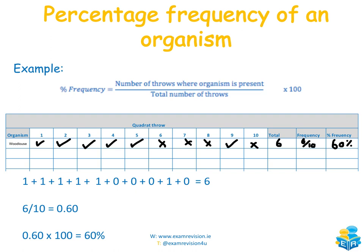For example, if a woodlouse was present on throws 1, 2, 3, 4, 5, and 9 out of 10 throws, the frequency is 6 out of 10, giving a percentage frequency of 60%. For grass present on 9 of 10 throws, the frequency is 9/10 × 100 = 90%. So there is a 60% chance of finding woodlouse and a 90% chance of finding grass on the next throw.